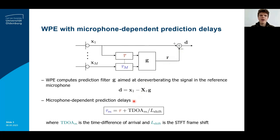After applying TDOA compensation in the STFT domain, the microphone-dependent prediction delays tau_m can be defined as a sum of the fixed prediction delay tau with a microphone-dependent TDOA compensation term composed of the TDOA between the reference microphone and microphone m, denoted as TDOA_m, and the STFT shift L_shift.